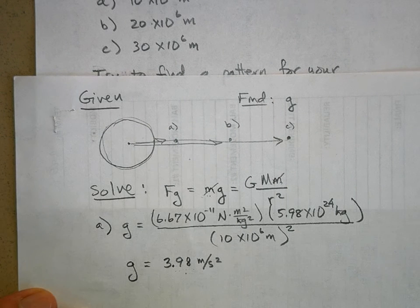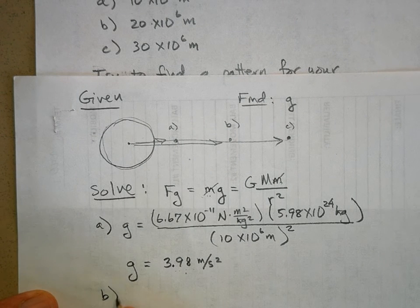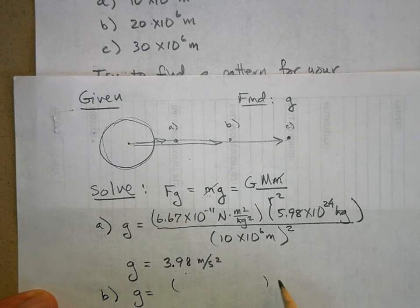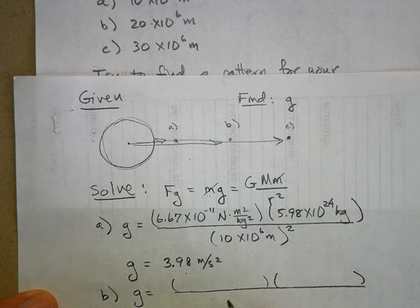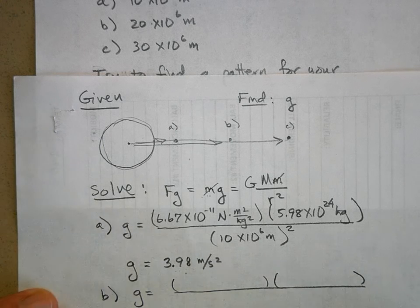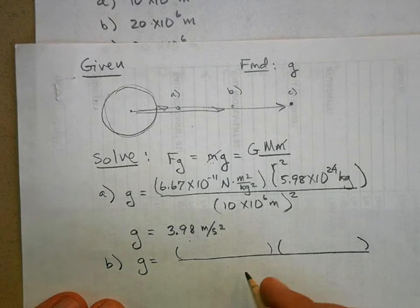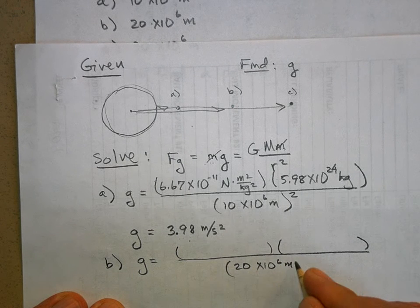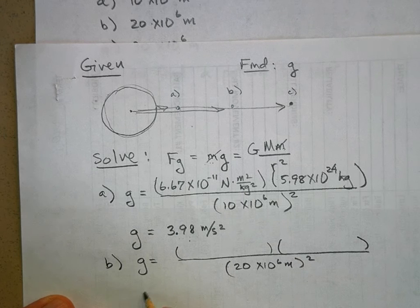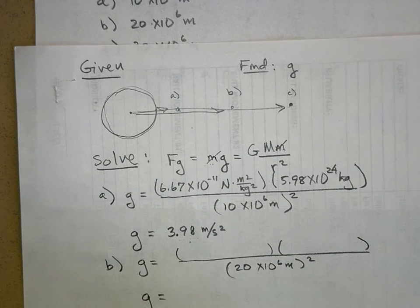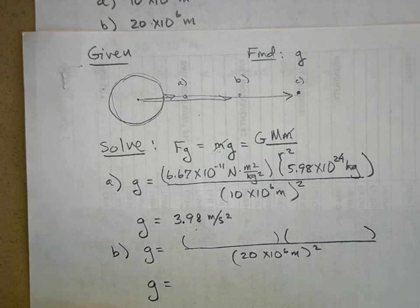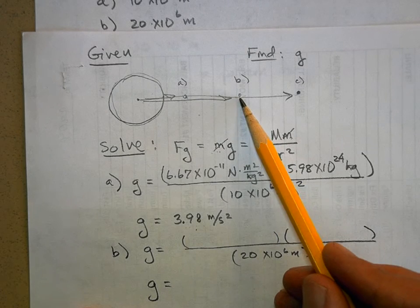Now for part B, g equals the same stuff on the top, but now it's going to be 20 times 10 to the 6 meters squared. What do you get when you do that?